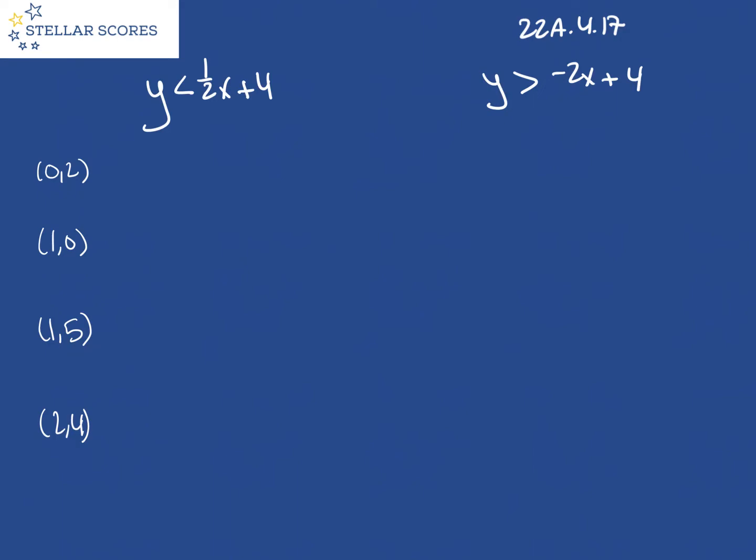This question gives us two inequalities and says there's some ordered pair that makes these true. Which is it? Easiest thing to do is just to shove these into each equation and see which one is true.